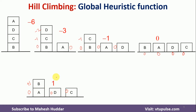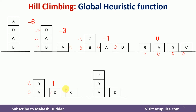Now I move C on top of B. Below A, nothing, so zero. Below B, one correctly placed block, so one. Below C, two blocks — A and B — both correctly placed, so two. Below D, nothing is there, so zero. The total value of this state is three.